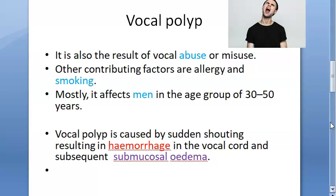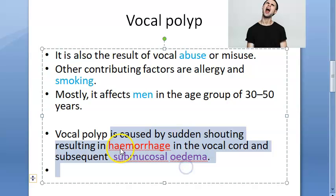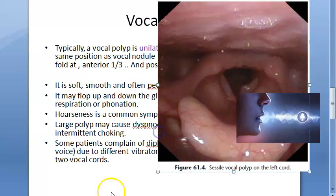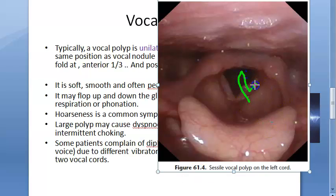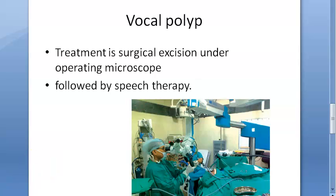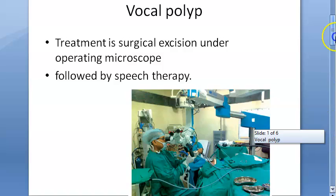To summarize: vocal polyp is a non-neoplastic solid benign condition caused by abuse or misuse of voice, occurring in men aged 30 to 50, with risk factors including allergy and smoking. Sudden shouting leads to hemorrhage in the vocal cord and submucosal edema. It is unilateral, arising at the free edge at the anterior one-third and posterior two-thirds junction — soft, smooth, and pedunculated. Symptoms include hoarseness, and if large: dyspnea, stridor, intermittent choking, and diplophonia. Treatment is surgical excision and speech therapy.